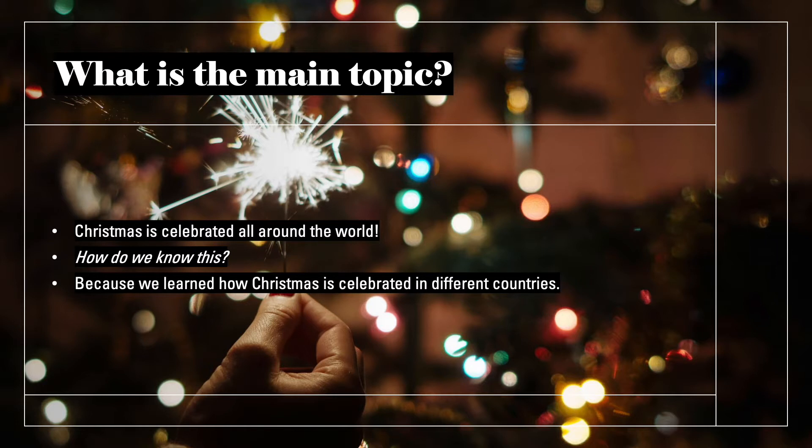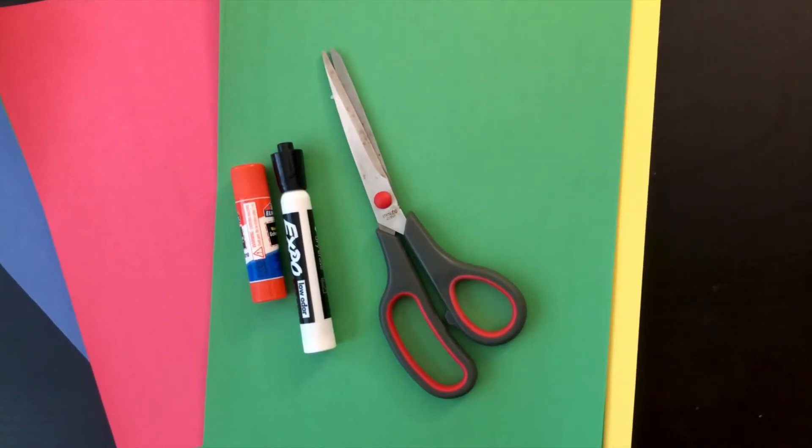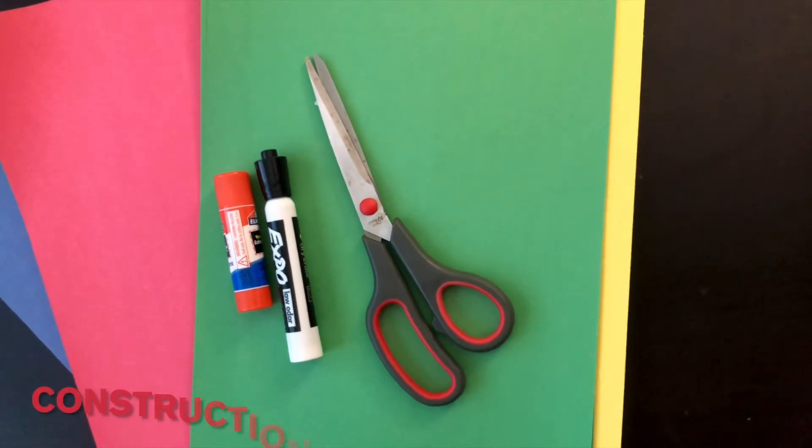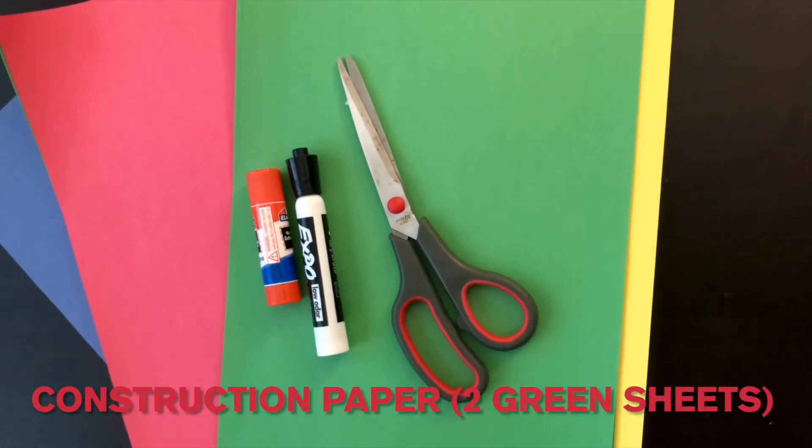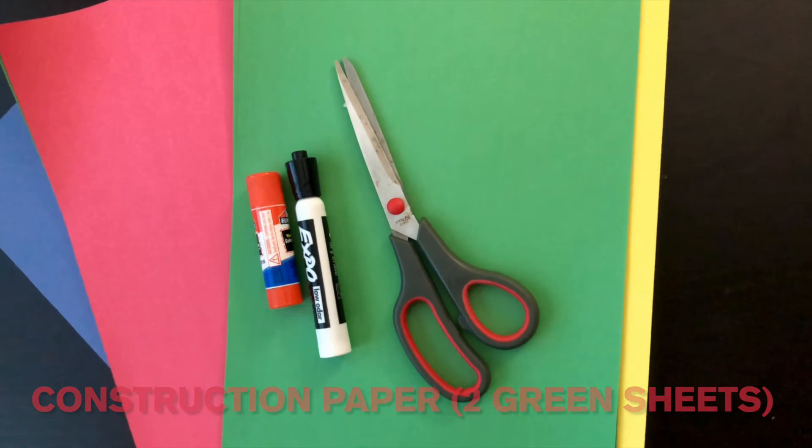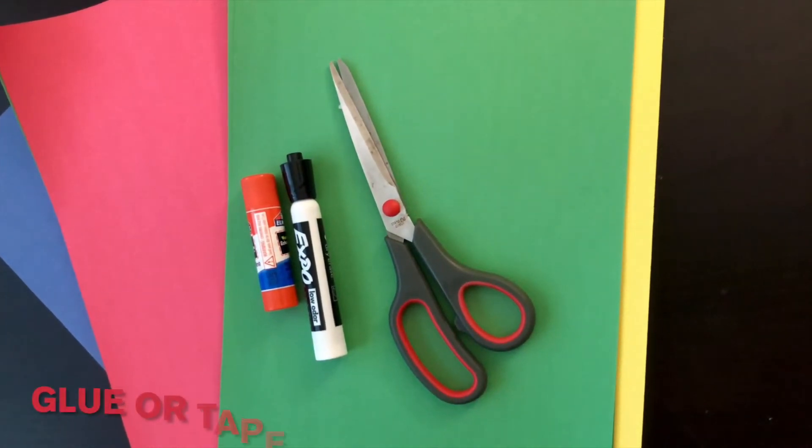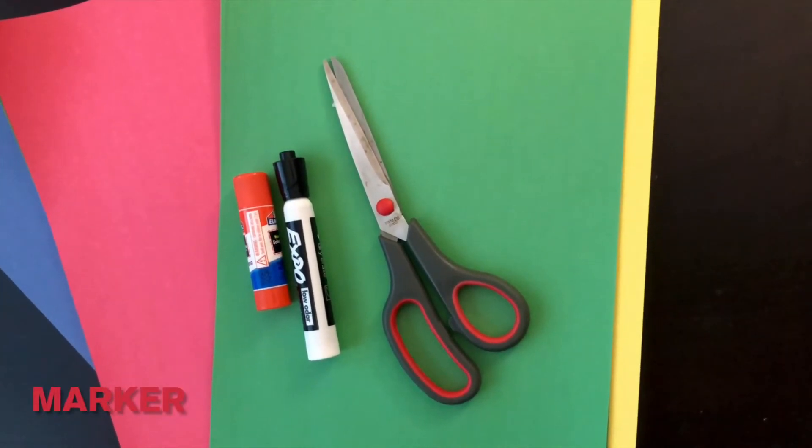Now, take out your materials because we'll be making a Christmas tree. For this activity, you're just going to need some construction paper. Make sure that you have at least two green ones, some glue or tape, a marker, and some scissors.